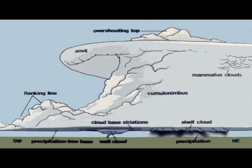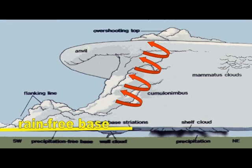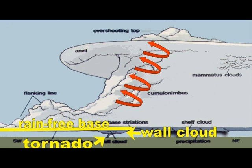With the supercell thunderstorm, we have a rotating updraft due to the vertical wind shear discussed earlier. Toward the southwest side of the storm and underneath that rotating updraft is where we're going to have a rain-free base, because the rain-cooled air is separate in the downdraft portion, located farther to the northeast. If the updraft can rotate enough and strengthen and tighten, that's where we'll get a wall cloud — a lowering from that rain-free base. If a tornado does develop, it occurs underneath the wall cloud, though not all wall clouds, even rotating ones, produce tornadoes.